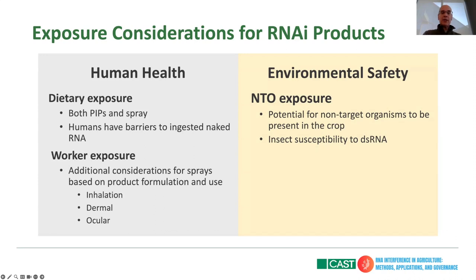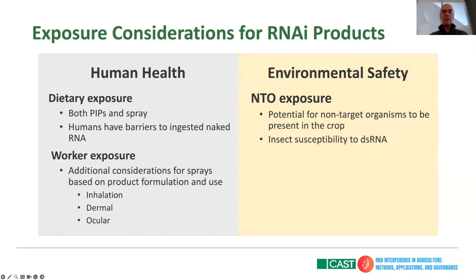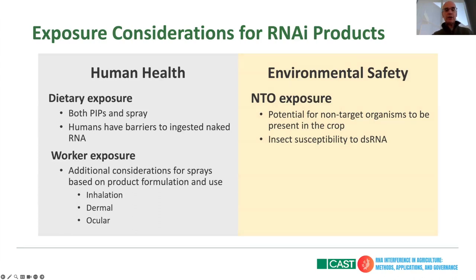For environmental safety, NTO — non-target organism — exposure must be considered: what is the potential for a non-target organism to be present in the crop being treated with the spray or the PIP? As Anna mentioned, what is the susceptibility of the insect to that double-stranded RNA? Some organisms, like Lepidoptera, are very recalcitrant and not that susceptible to double-stranded RNA when simply ingested into their gut system.